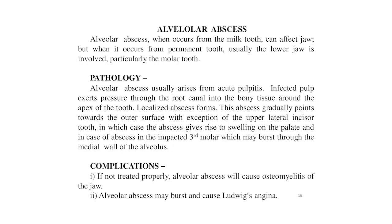Alveolar abscess: when it occurs from a milk tooth it can affect either jaw, but when from a permanent tooth the lower jaw — particularly the molar tooth — is usually involved. Pathology: alveolar abscess usually arises from acute pulpitis. The infected pulp exerts pressure through the root canal into the bony tissue around the apex of the tooth, forming a localized abscess.